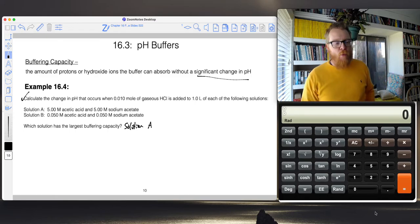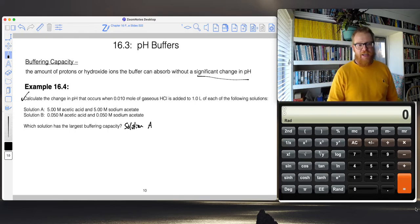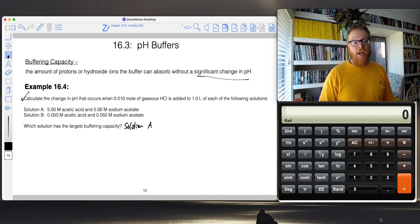Because it has more of that weak acid and conjugate base present, it's going to be able to absorb these protons more effectively. Solution B, 0.05 molar and 0.05 molar, that would have a very small buffering capacity. But all the same, let's do the calculation.